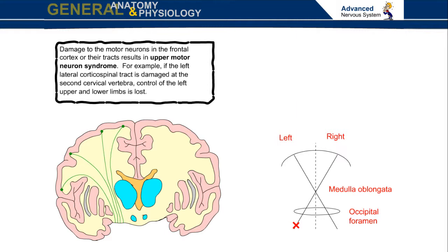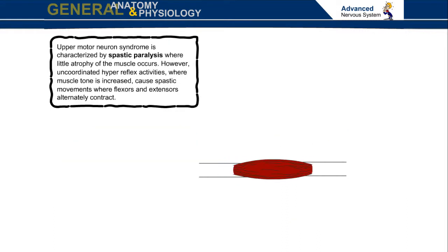Upper motor neuron syndrome is characterized by spastic paralysis where little atrophy of the muscle occurs. However, uncoordinated hyperreflex activities where muscle tone is increased cause spastic movements where flexors and extensors alternately contract.